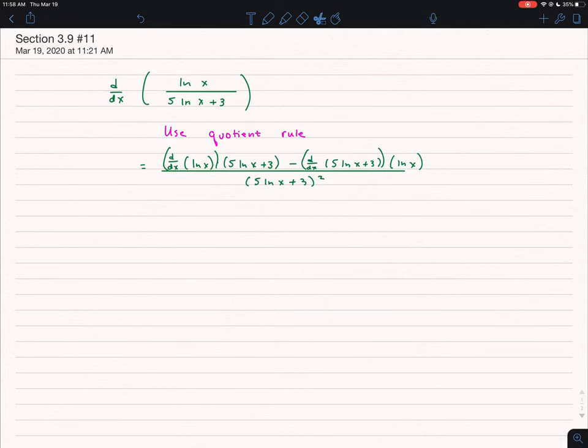The quotient rule is to take the derivative of the numerator and multiply it by the denominator, and then subtract the derivative of the denominator multiplied by the numerator, divided by the entire denominator squared.